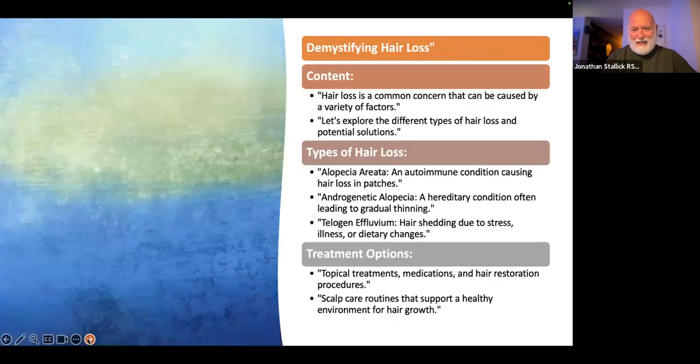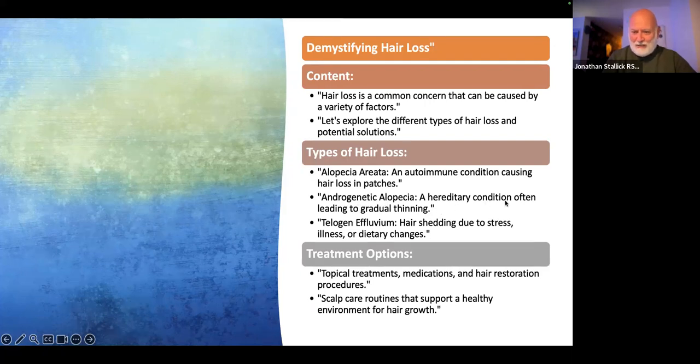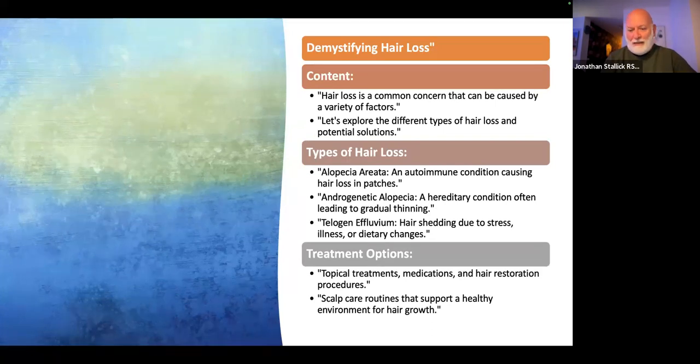Let's talk about hair loss. There's alopecia areata - an autoimmune condition which causes hair loss in patches. Then there's androgenetic alopecia - a hereditary condition with gradual thinning. Telogen effluvium is hair shedding due to temporary conditions like stress, illness, or dietary changes. Getting yourself treated homeopathically is a good way to maintain your body's general health, which then feeds through to the scalp and hair.